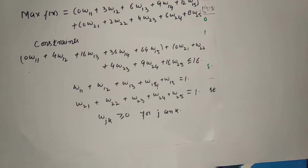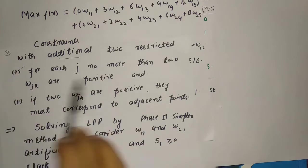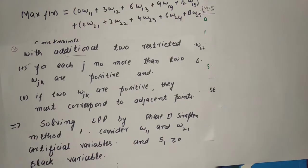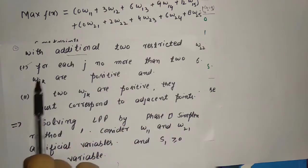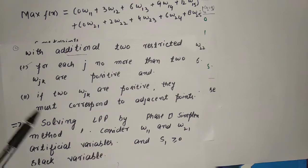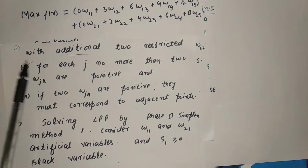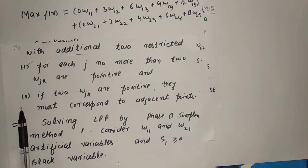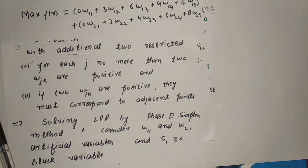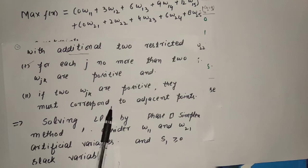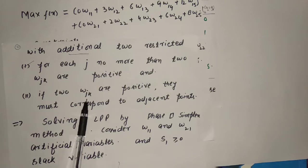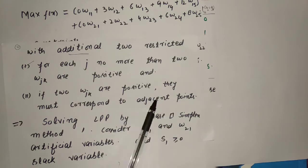We solve the resulting problem using the two-phase simplex method with two additional conditions. First: for each j, no more than two w_jk are positive — meaning no more than two w_jk will be in the basic variable. Second: if two w_jk are positive, they must correspond to adjacent points — if any two w_jk are in the basis, they should be adjacent to each other.